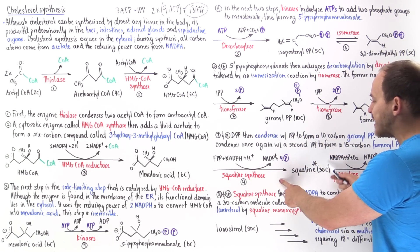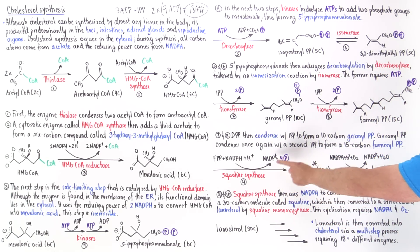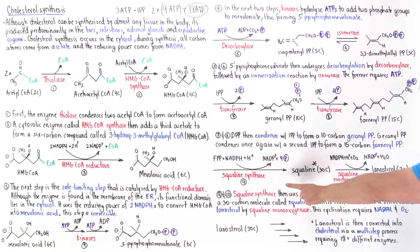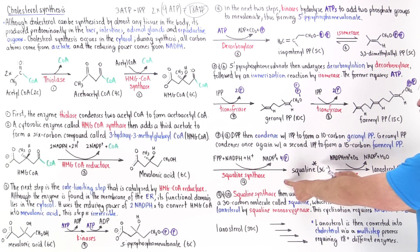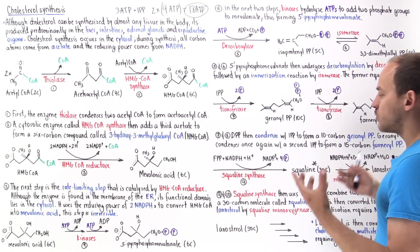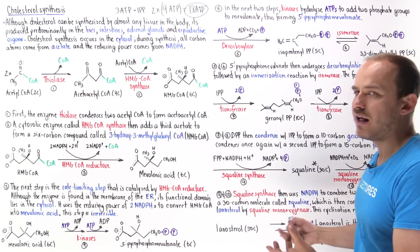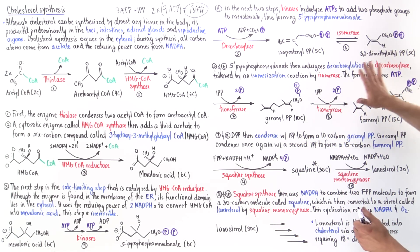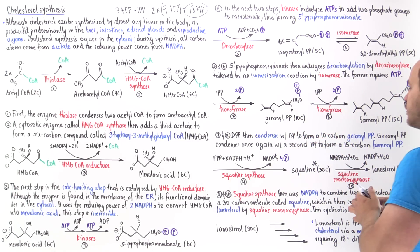Because squalene has no phosphate groups, it is very hydrophobic and cannot dissolve in the cytosol by itself. So squalene actually requires an intracellular sterol carrier protein. In fact, all the intermediates from this molecule forward require an intracellular carrier protein to remain dissolved within the cytoplasm, as opposed to the earlier intermediates that had phosphate groups to help dissolve them.